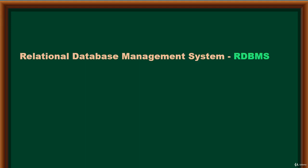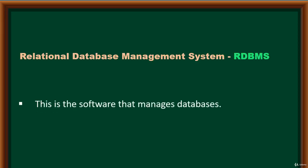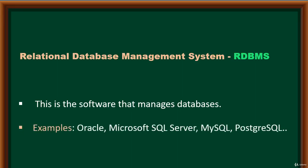A relational database management system, also referred to as RDBMS, is basically software used to manage databases. There are several types depending on the vendor. Examples include Oracle, Microsoft SQL Server, MySQL, PostgreSQL, and many others.